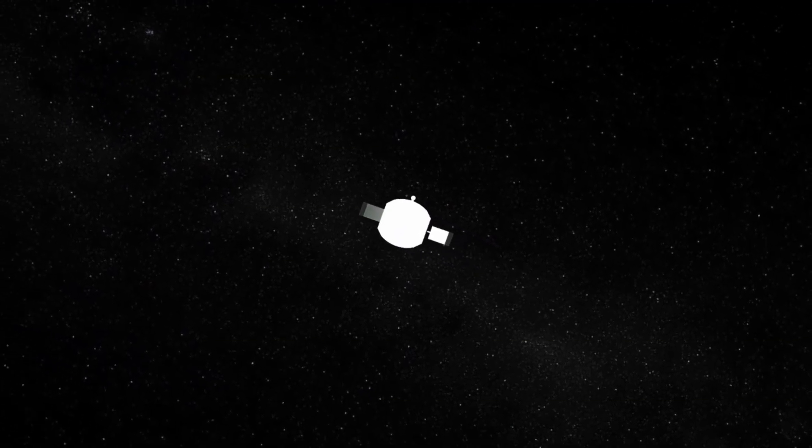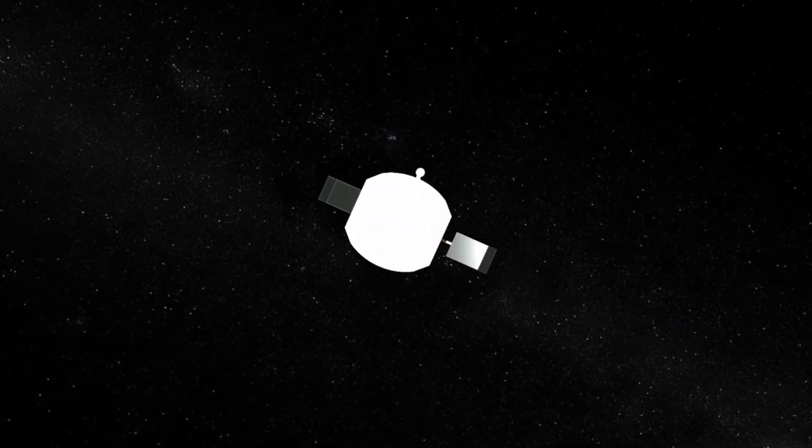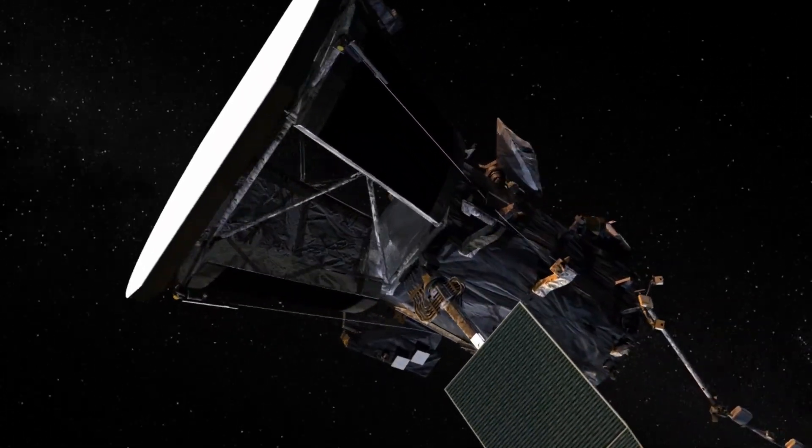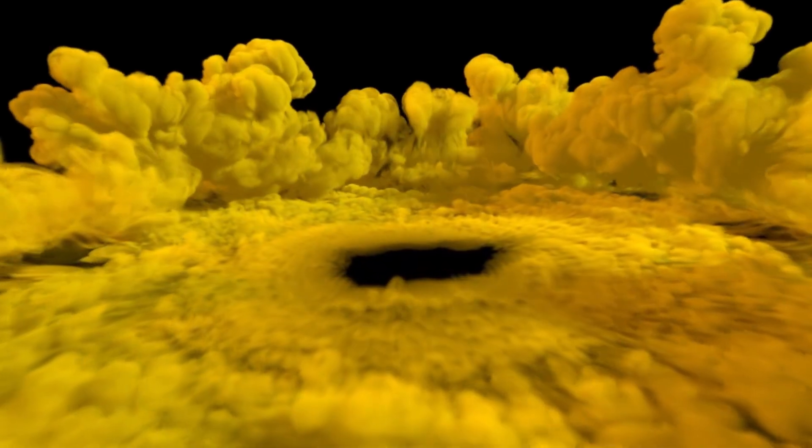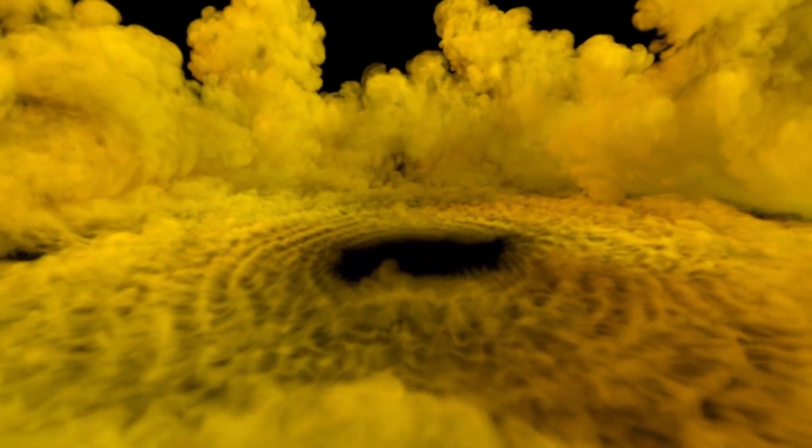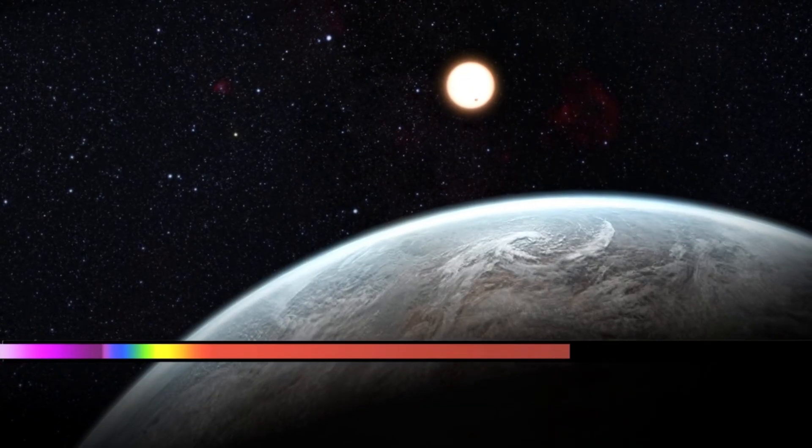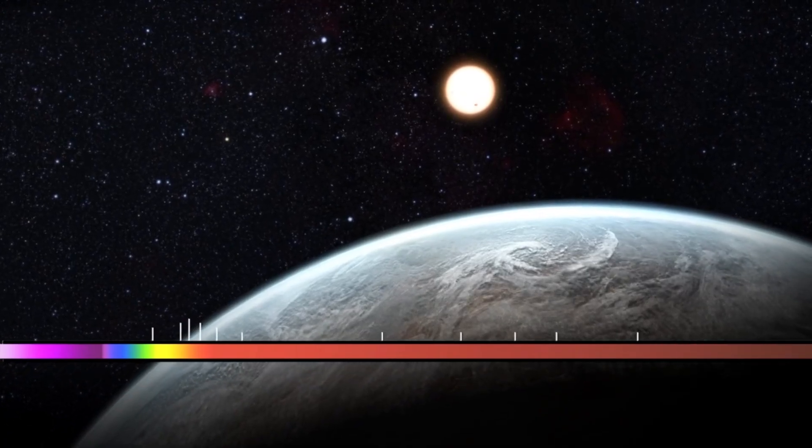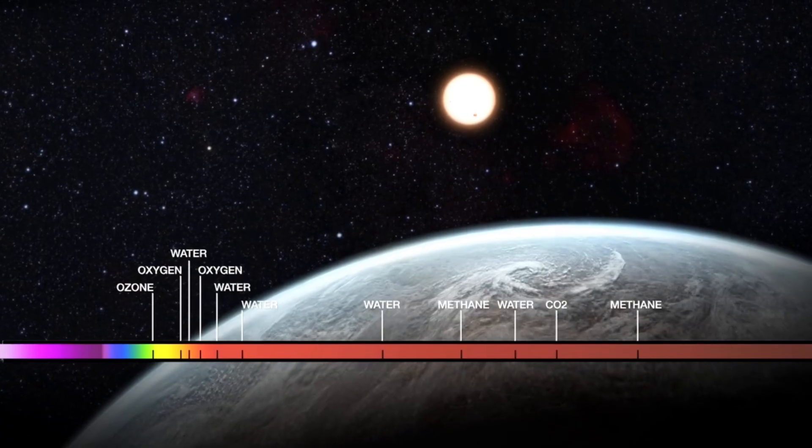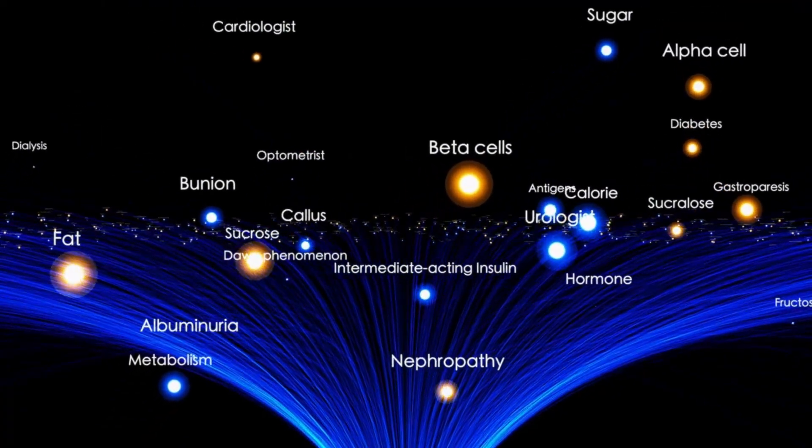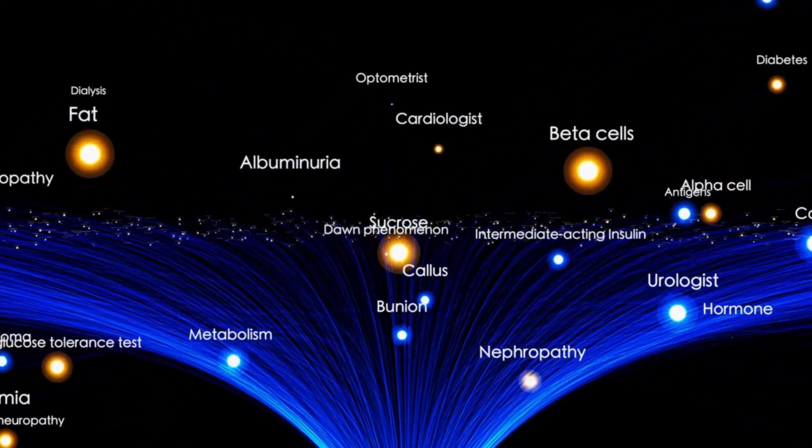Despite being launched after Voyager 2, Voyager 1 reached Jupiter and Saturn first due to its more direct trajectory. Voyager 2 took a different path, enabling it to visit Uranus and Neptune as well, making it the only spacecraft in history to have visited all four gas giants. The data collected during these flybys fundamentally changed our understanding of these distant worlds, their rings, moons, atmospheres, and magnetic fields.